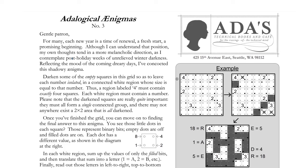Darken some of the empty squares in this grid so as to leave each number isolated in a connected white region whose size is equal to that number. So the four ends up in a region of size four, the two in size two, the three in size three. Each region label must contain exactly that many squares. Each white region must contain a number. The darkened squares must all form a single connected group, and there may not anywhere exist a 2x2 area that is all darkened.